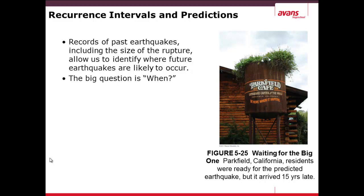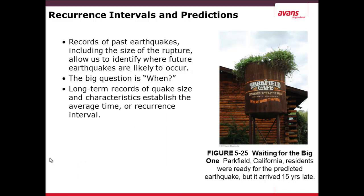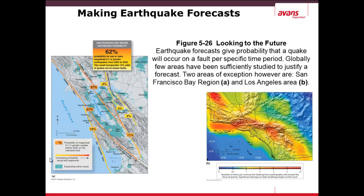We often talk about recurrence intervals when making predictions. These come from records of past earthquakes, noting the size of the rupture, which helps identify when another likely earthquake may occur. But the question of when still remains. Knowing the recurrence interval — how often an earthquake of a certain size happens in a given location — we can draw probability maps. For the San Francisco area, adding up the probabilities across different faults gives a 62% probability of a magnitude 6.7 earthquake within a 29-year interval. A similar analysis is shown for Los Angeles.